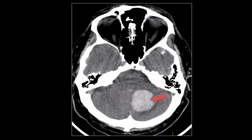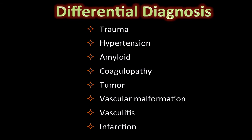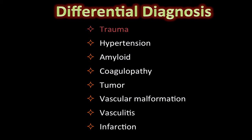This is consistent with hemorrhage. This is the differential diagnostic list for intraparenchymal brain hemorrhage — pause here and think about the provided possibilities. Trauma is a common cause of intraparenchymal hemorrhage; however, in the provided case there was no history of trauma and there were no secondary features to support this possibility. Hypertensive bleeds are very common.